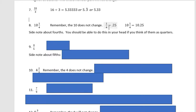That you might know because whenever you're talking about fourths, you should be able to do it in your head if you think of them as quarters. One quarter is twenty-five cents or 0.25. So ten and one fourth is going to be 10.25.